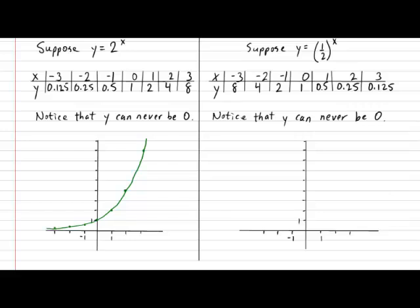All right, with your grid ready to go, let's put down all our coordinates. So, when x is negative 3, y is 8. Right about there. Next, when x is negative 2, y is 4. When x is negative 1, y is 2. When x is 0, y is 1. When x is 1, y is half. When x is 2, y is 0.25. And, finally, when x is 3, y is 0.125.